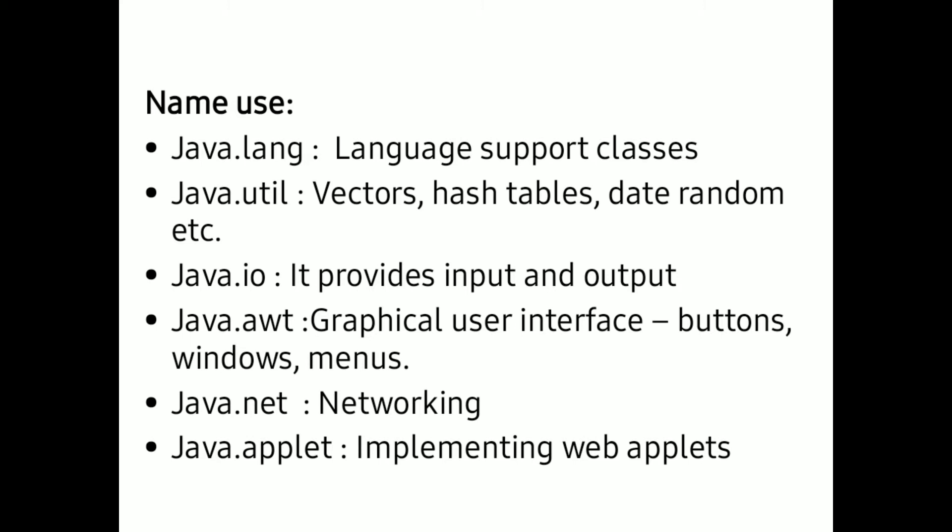Java.io package provides input/output related classes. When we are performing input/output functionalities in our program, we can use java.io package. Java.awt package gives us the classes used for developing a graphical user interface, including buttons, windows, and menus.